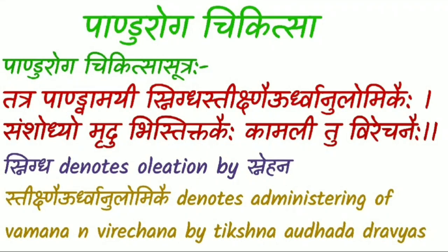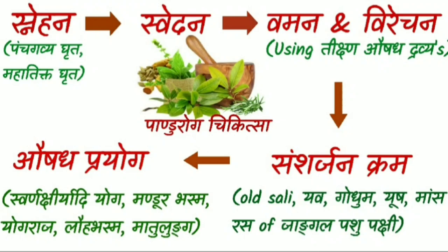Moving on to Panduruga Chikitsa, beginning with Chikitsa Sutra. The treatment principle of Panduruga is narrated in this shloka. Here, Snigdha denotes oleation by Snehana. Sa-Tikshna-Urdhva-Anulomika denotes administering Vamana and Virechana by Tikshna Aushadha Dravyas. Firstly, Snehana should be done using Ghrutas such as Panchagavya Ghrutha or Mahatiktaka Ghrutha. After Snehana, Swedana should be administered. Then, using Tikta Aushadha Dravyas, administer Vamana and Virechana procedures. These Shodhana procedures lead to Koshta Shuddhi.